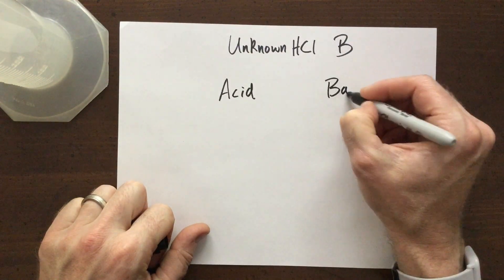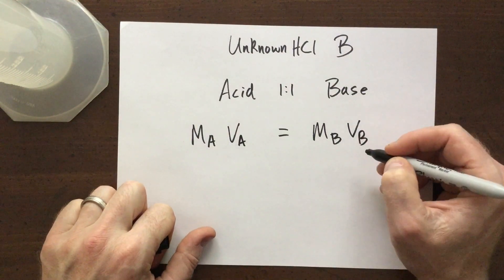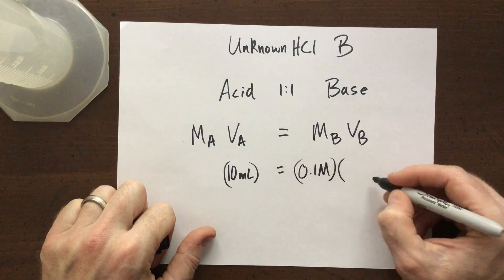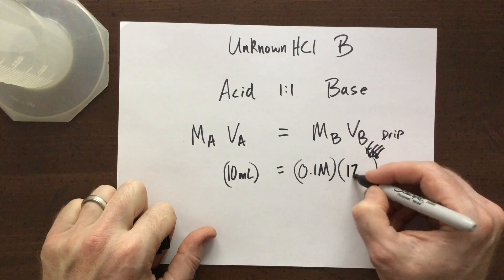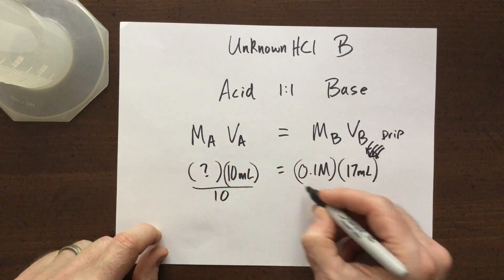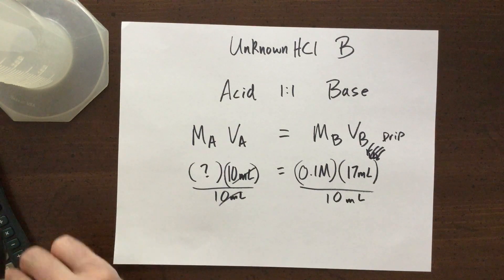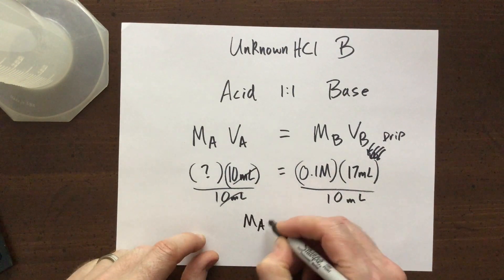So now back to the math. Let's set up our MAVA formula. We know that we use 10 milliliters of the unknown acid. We know that our base was 0.1 molar. We know that we use 17 milliliters of our base to get this to neutralize. Then we do our algebra and figure out that we have a molarity of acid that is 0.17 molar.